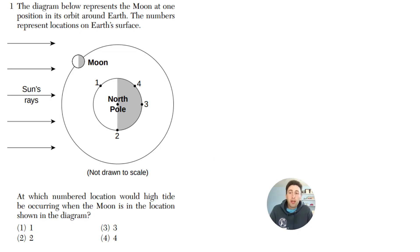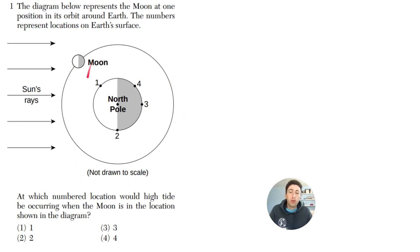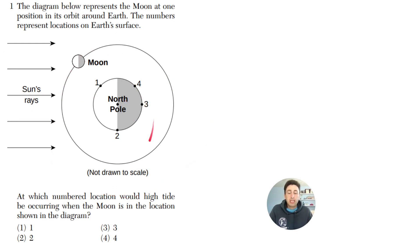Question one: the diagram below represents the moon at one position in its orbit around Earth. Numbers represent locations on Earth's surface. At which numbered location would high tide be occurring when the moon is in the location shown in the diagram? Here's the Earth, the sun's rays, and the moon orbits around the Earth. The moon orbits around the Earth as the Earth orbits around the sun, and we have the different phases of the moon as it orbits.